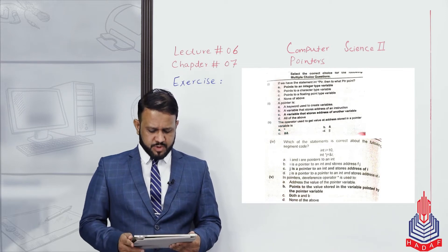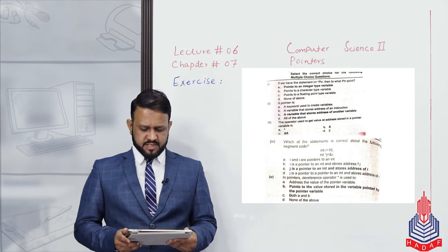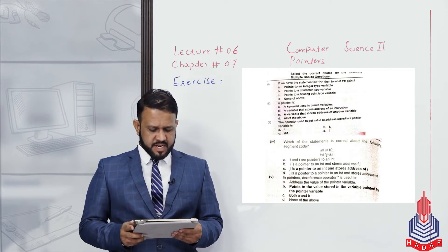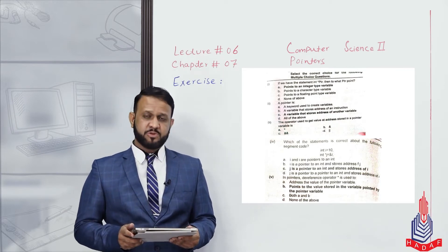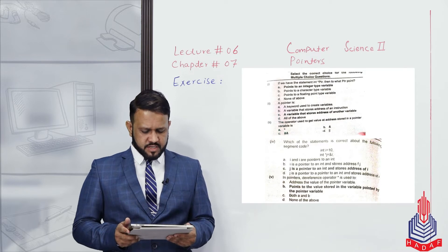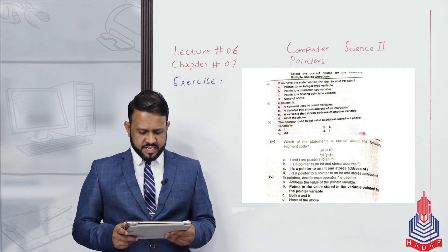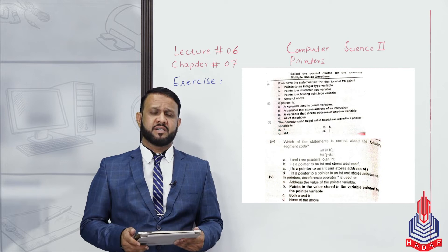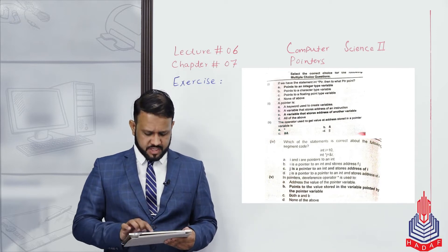Our third MCQ asks which operator is used to get addresses of variables. Choices are: alpha — star/asterisk; beta — percent sign; charlie — && (which is the conditional operator); delta — another and operator. The question is which operator is used to get the values stored in a pointer variable. The correct option is alpha — star — through which we can print or access the value of the pointer variable.